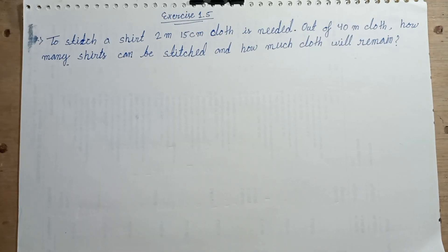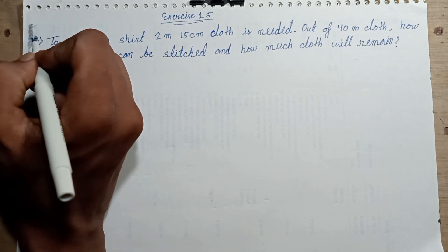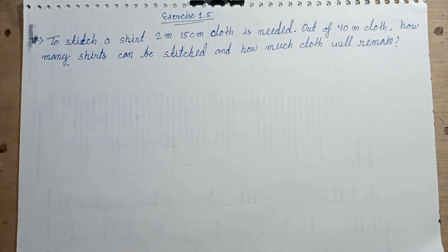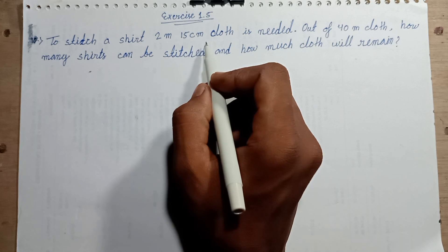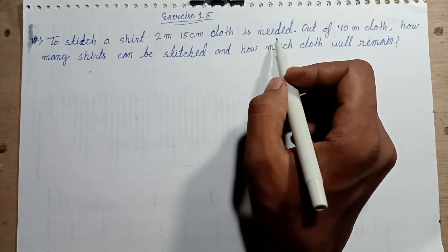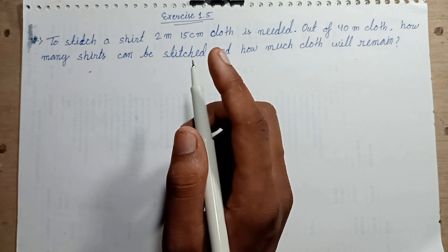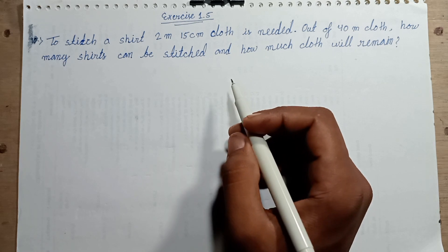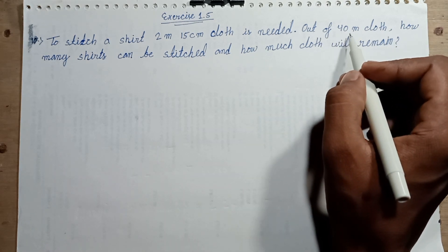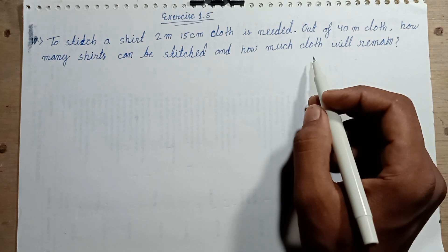Welcome back to this episode. This episode discusses question number 10, Exercise 1.5, Class 6. The question: to stitch a shirt, 2 meters 15 centimeters of cloth is needed for one shirt. Out of 40 meters of cloth, how many shirts can be stitched and how much cloth will be remaining?